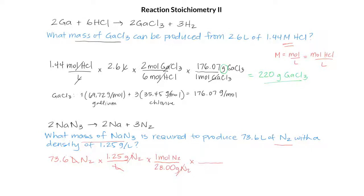And now we can use a mole ratio that comes from the balanced equation. We can see that we have 3 moles of N2 being produced from 2 moles of NaN3. Cancelled moles of N2 leaves us with moles of NaN3.